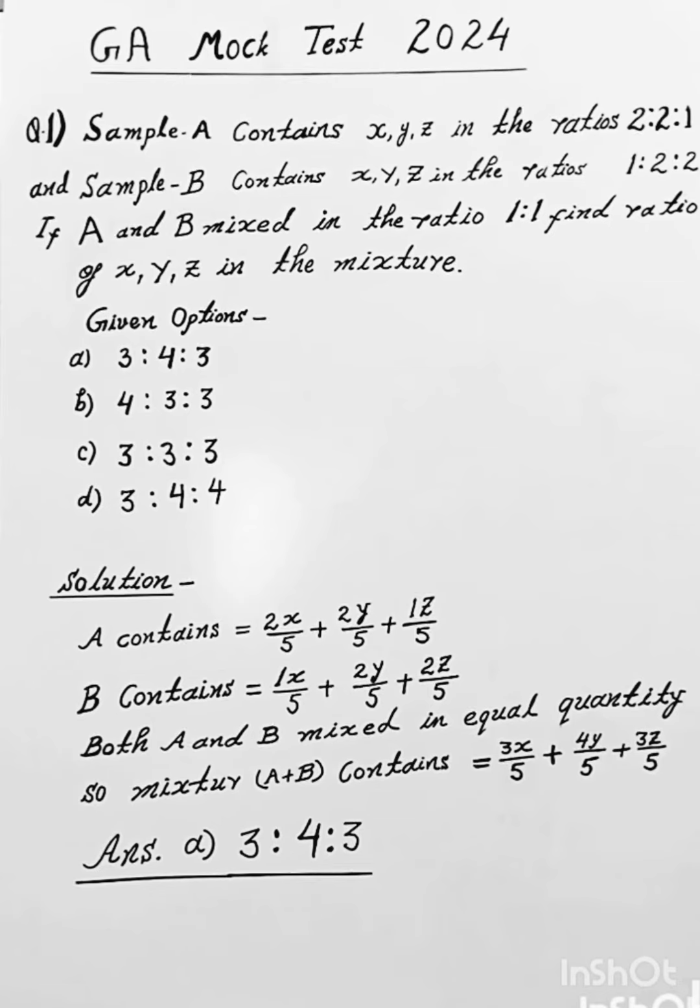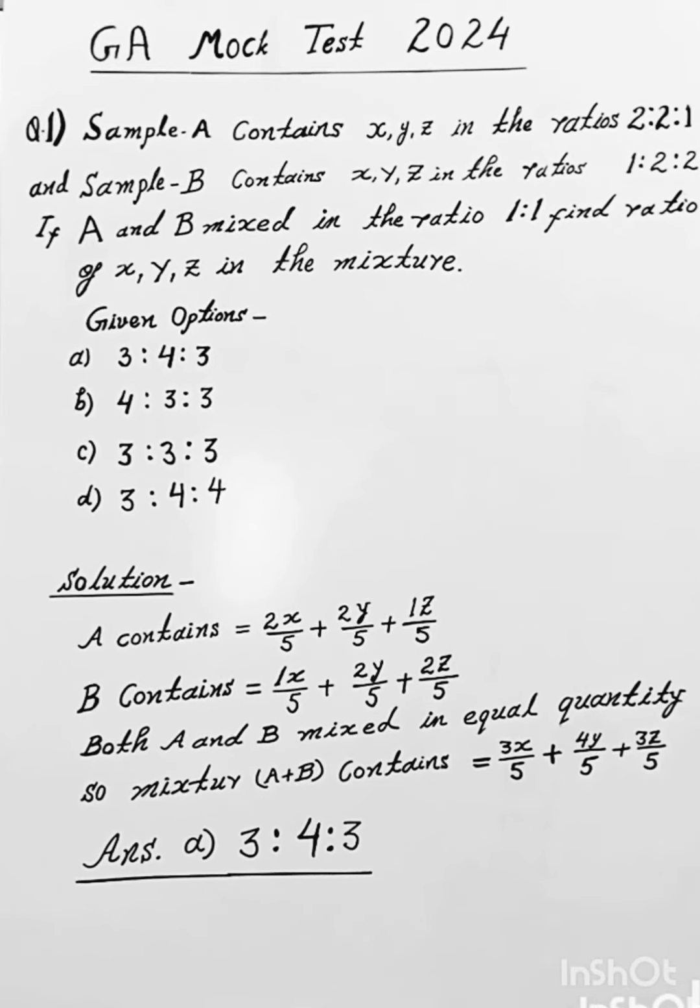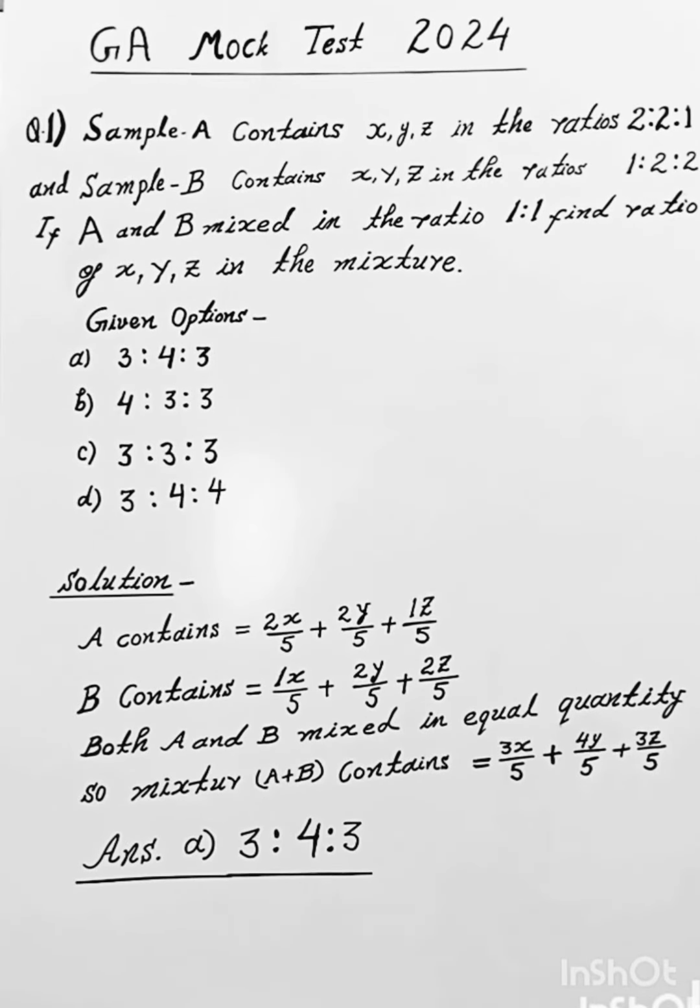For sample A, one unit contains 2X/5 plus 2Y/5 plus 1Z/5. And for sample B, one unit contains 1X/5 plus 2Y/5 plus 2Z/5.